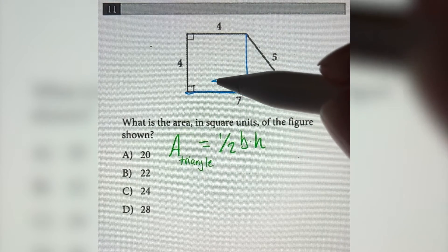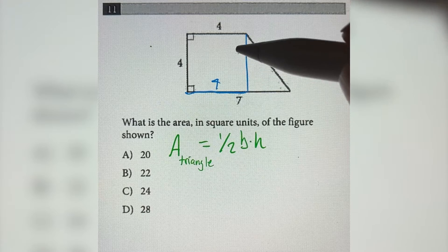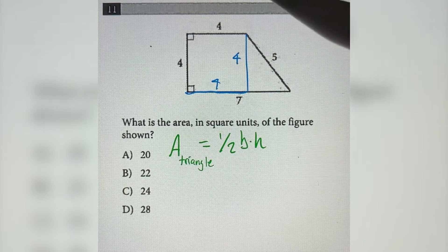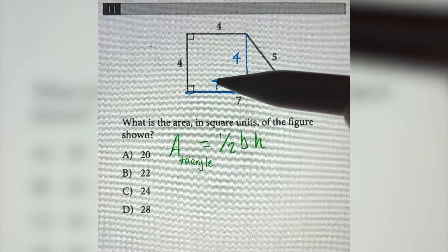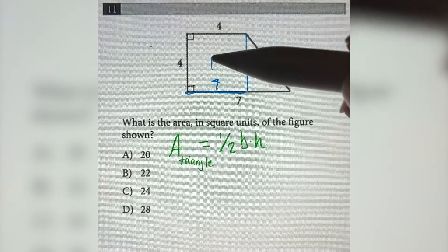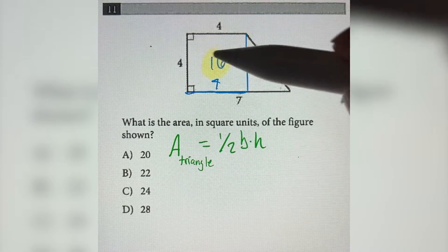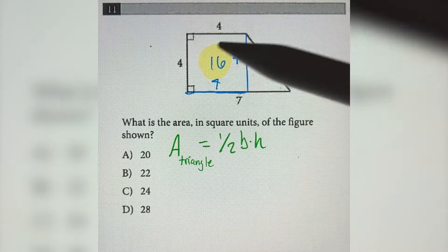And since this is a square, I know that this side length is equal to 4, and this height is now equal to 4. And to find the area of a square, it's just one side length squared, or 4 times 4, which is 16. So the area of this square right here is equal to 16.